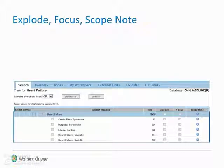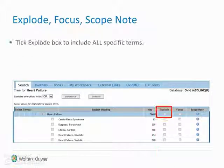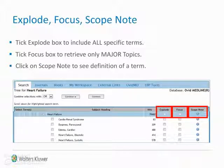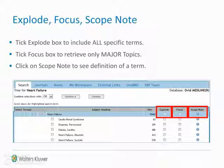The Ovid Medline tools: tick the explode box next to heart failure if you wish to include all the specific terms below in your search — this would increase the number of hits. Tick the focus box if you wish to retrieve only those articles where heart failure is the major topic or focus of the article — this would decrease the number of hits. Click on the scope note icon to see a definition of your subject heading. It is not necessary to use the explode or focus options, however they can help considerably in defining your search. Click on continue once you are finished.